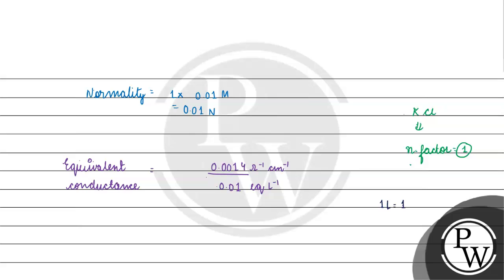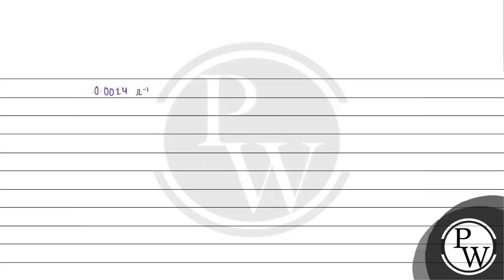One liter equals one decimeter cube, and one decimeter cube equals 1000 centimeter cube. So we convert the liter to 1000 centimeter cube in the expression. Now we have: 0.0014 ohm inverse centimeter inverse multiplied by 1000 centimeter cube, divided by 0.01 equivalents.